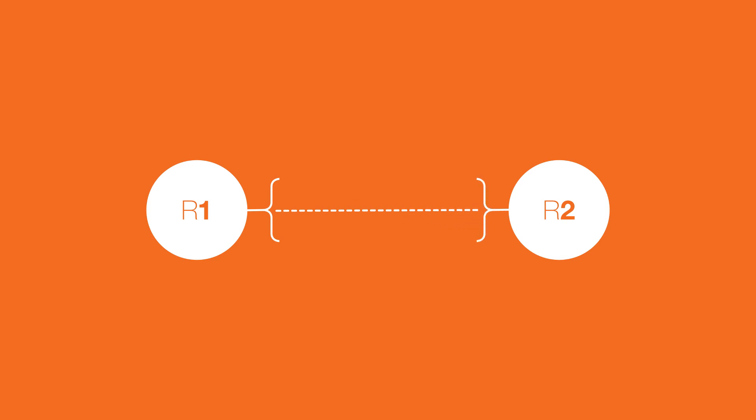There may be switches and PCs between these two router interfaces, but with or without them, the story and communication between routers in this case is exactly the same. R1 sends an ARP request — a broadcast heard and read by every device on the network — saying: if your IP address is 10.10.2.99, I need your MAC address. The left interface of R2 sends a unicast ARP reply back to R1 with its MAC address.